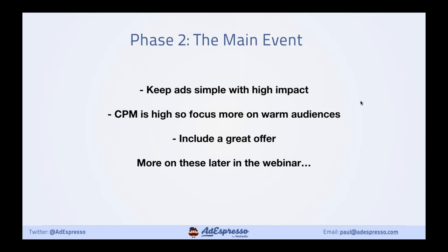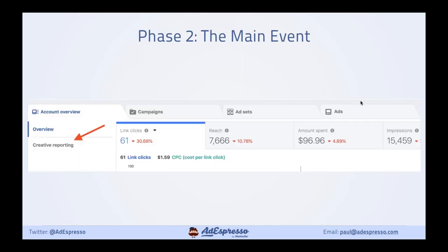For the main event, keep it simple and high impact for the ads. Your CPM is high, so focus on warm audiences. Include a great offer. A little-known tip: if you go into Ads Manager and navigate to the Account Overview tab on the left — the one people forget about because they go straight to Campaigns, Ad Sets, and Ads — there's one hiding called 'Creative Reporting.' What it does is aggregate your ads' performance across all campaigns.